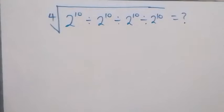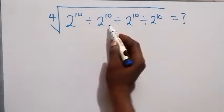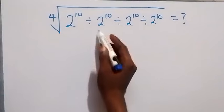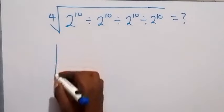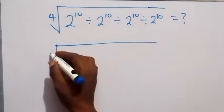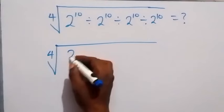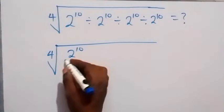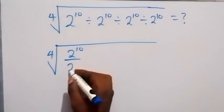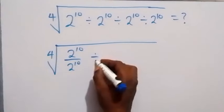From here, when we handle the first two terms, we can write this as the fourth root of 2 raised to power 10 divided by 2 raised to power 10, then divided by 2 raised to power 10 divided by 2 raised to power 10.